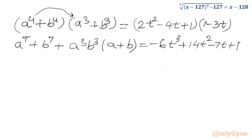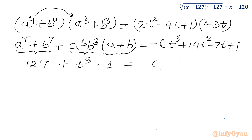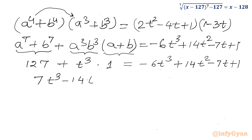In the LHS, ab was t so a cube b cube is t cube, and a plus b was 1. Therefore a power 7 plus b power 7 plus t cube equals minus 6t cube plus 14t square minus 7t plus 1. Since a power 7 plus b power 7 equals 127, we get 127 plus t cube equals minus 6t cube plus 14t square minus 7t plus 1. Taking all terms to the LHS gives 7t cube minus 14t square plus 7t plus 126 equals 0.